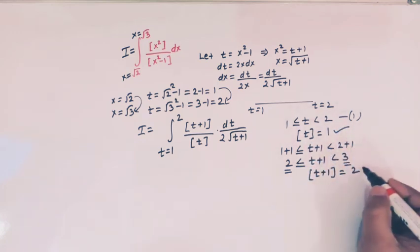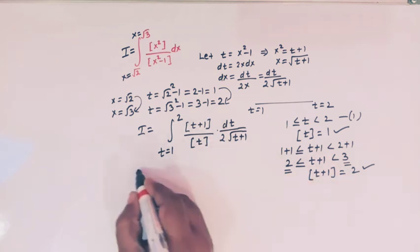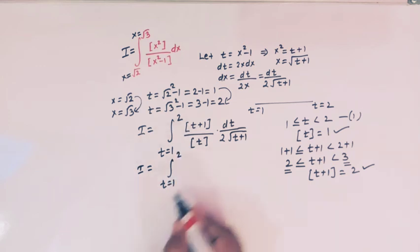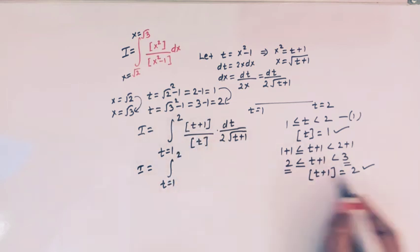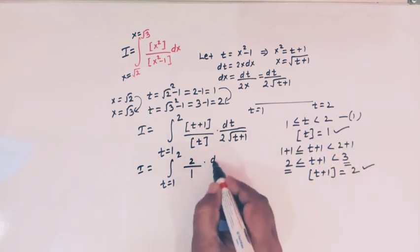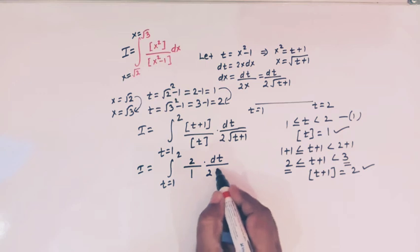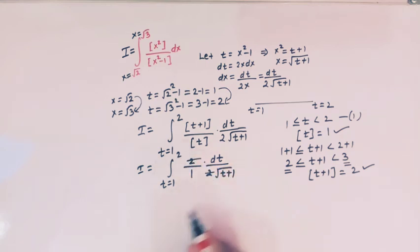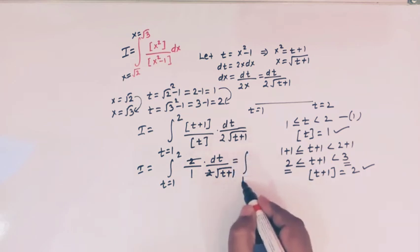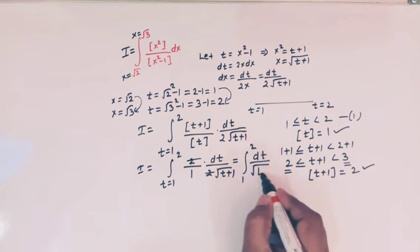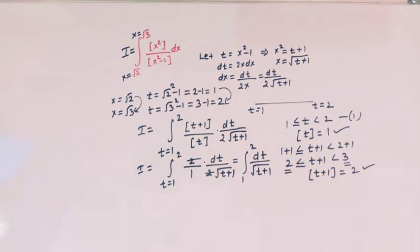Substituting these values, the integral I becomes from 1 to 2 of 2 over 1 times dt over 2 times square root of t plus 1. The two and two cancel, leaving us with the integral from 1 to 2 of dt over square root of t plus 1.